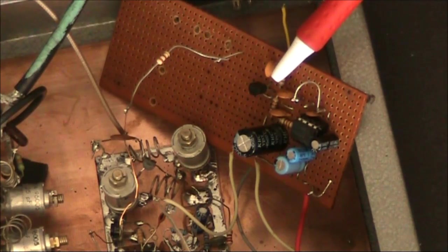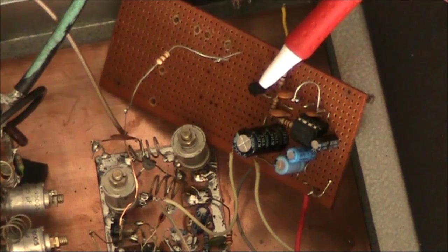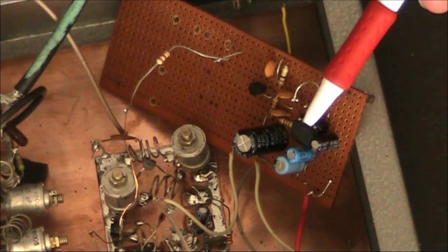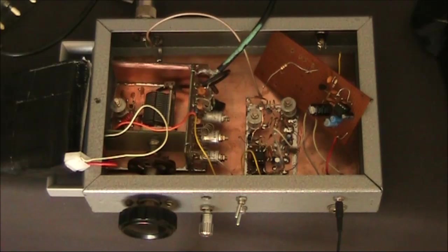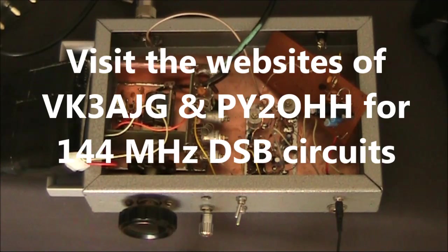And finally we have the receive audio, a BC548 audio preamp, and an LM386 audio amp. There's not a lot original about this, and completed examples can be seen on the websites of VK3AJG and PY2OHH.